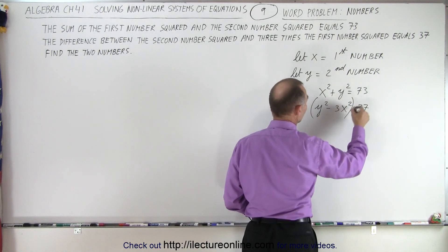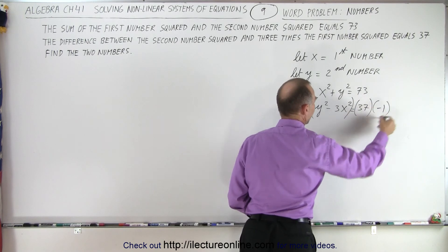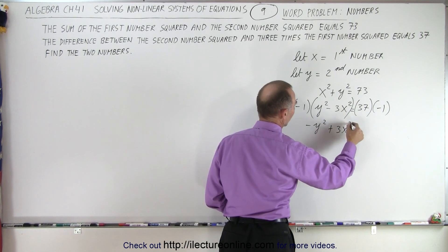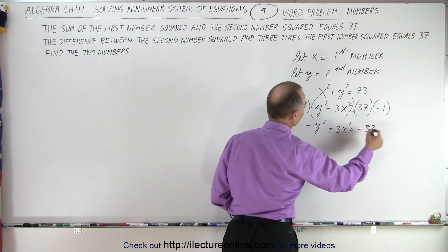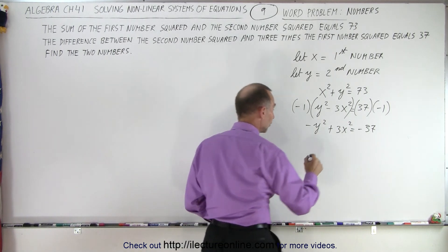So here we're going to multiply both sides of this equation by negative one. When we do that, we get a minus y squared plus 3x squared equals a negative 37. And now we can add these two together to eliminate the y's.